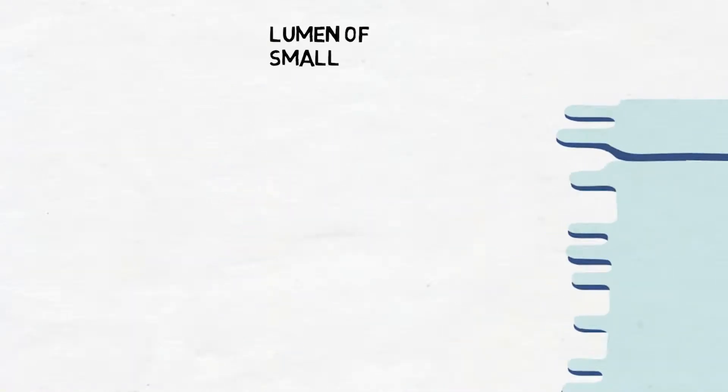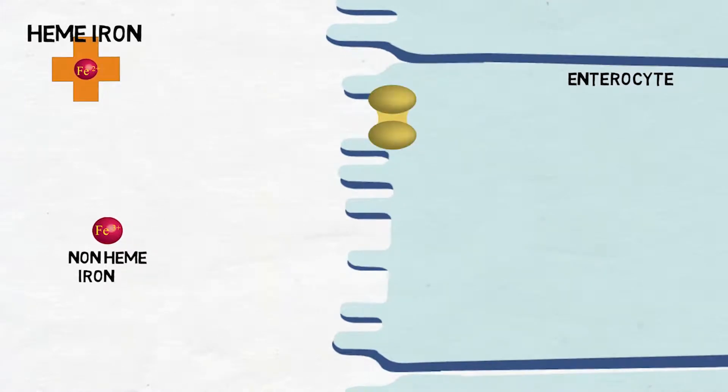So iron travels through the stomach and arrives in the lumen of the small intestine. Heme iron absorption into the enterocyte occurs by a separate heme transporter located in the apical surface of the enterocyte.